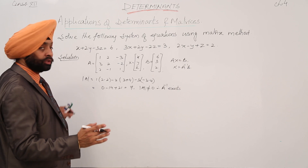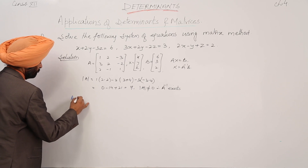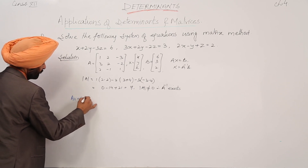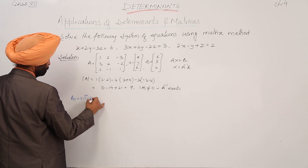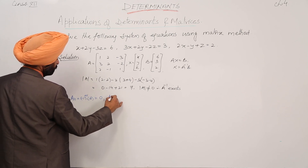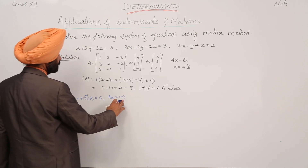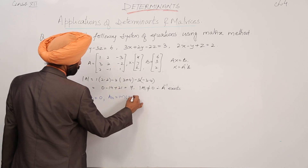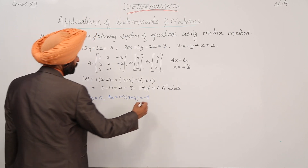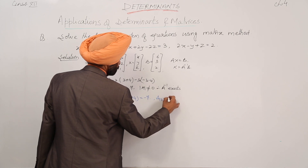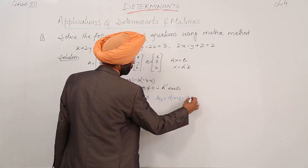Now let's move with the cofactors. A11 is equal to positive 1 with (minus 1 plus 1), so A11 equals 0. Now A12 is equal to minus 1 with the odd power, so minus 1 with (3 plus 4), this is equal to minus 7. Then A13 is equal to positive 1 with (minus 3 minus 4), this is equal to minus 7.